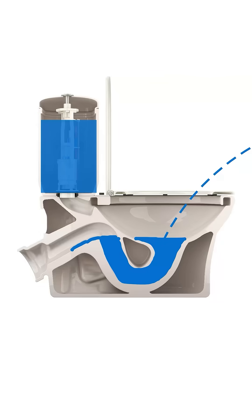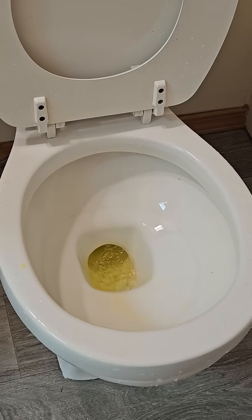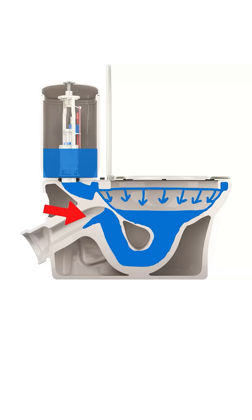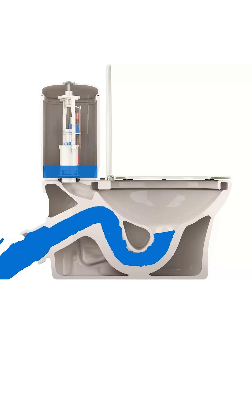To remind you why this should work at all — to flush a toilet, all you need to do is dump enough water into the bowl quickly enough to raise the water level above the trap, and then as that water exits, it creates a siphon that pulls the rest of the water and any undesirable logs with it.